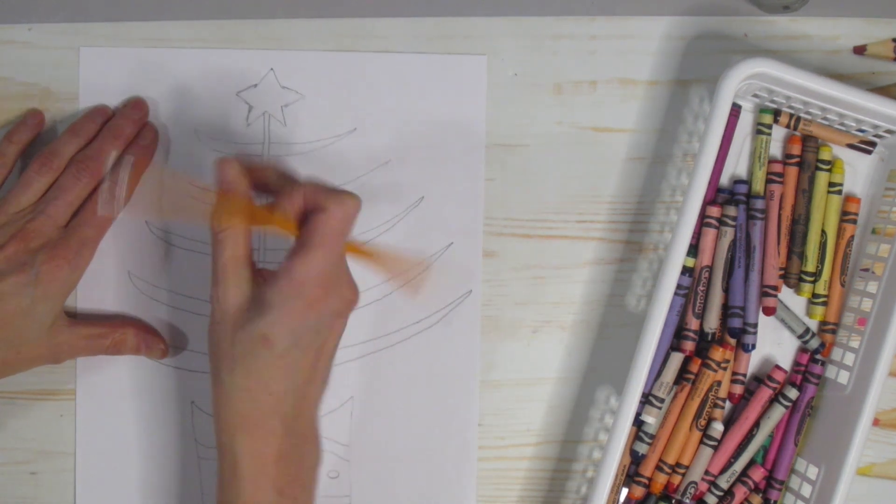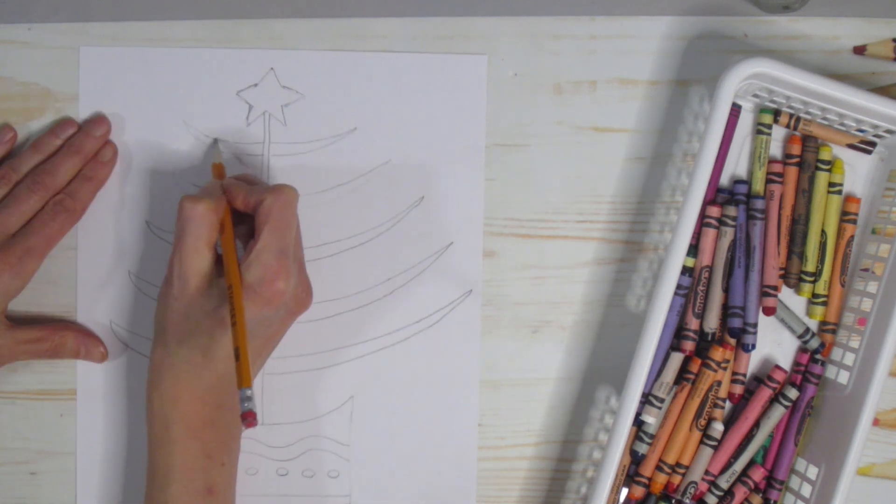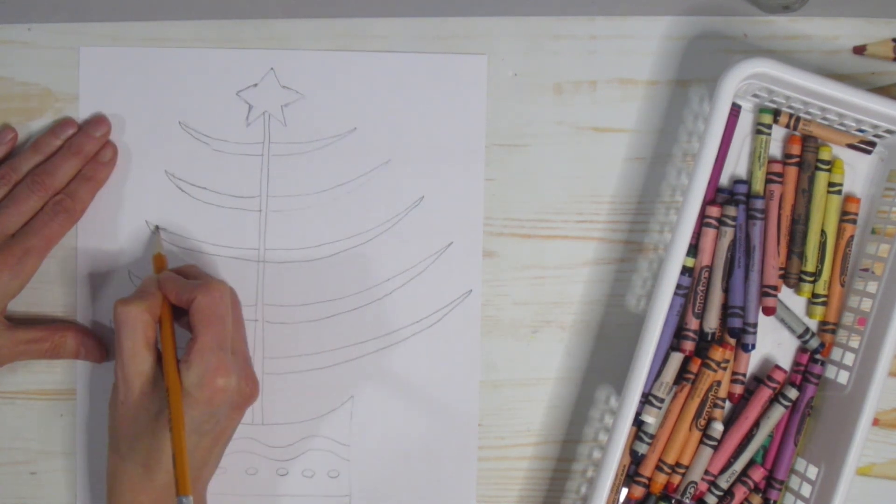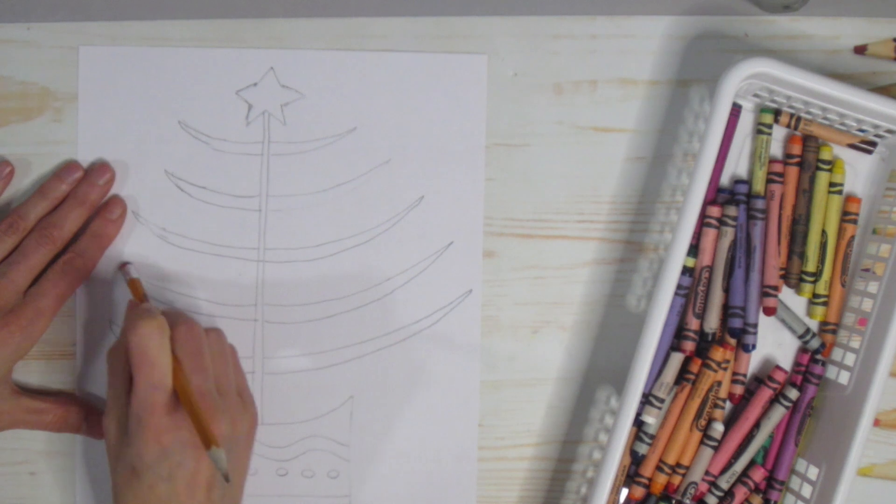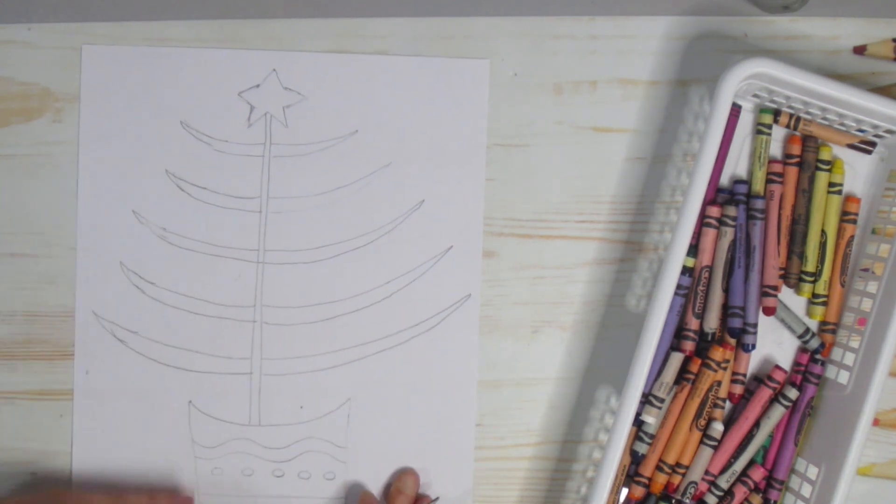And because I used a pencil, I can just go erase what I don't like, fix it up. So that's what I'm going to do. Just extending all these little branches here, just making them, trying to make them symmetrical.